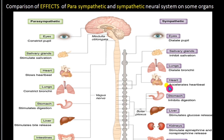In the sympathetic system, the heart will be accelerated — the heartbeat rate will be increased so that more blood is pumped out and more oxygen is supplied to the organs. In the stomach, it inhibits digestion so the energy will be conveyed to the muscles, not to the digestive system.